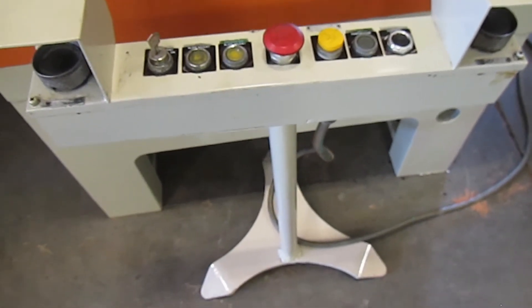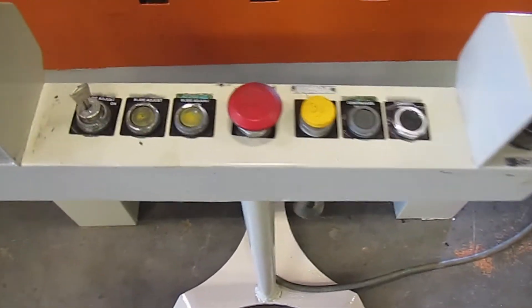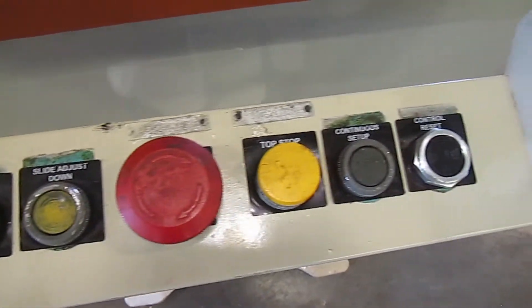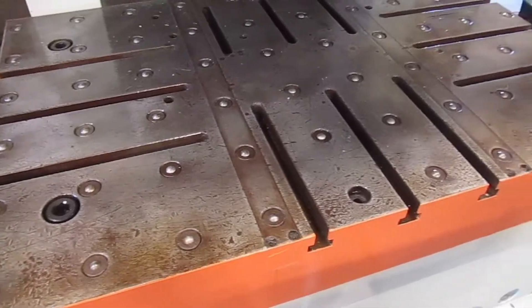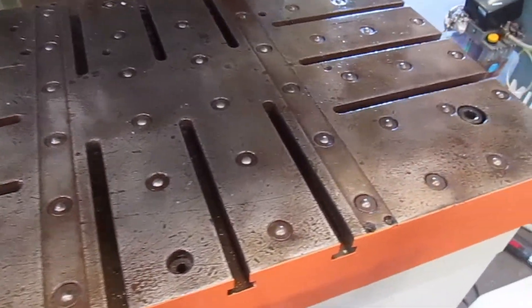This is the T stand for the press and a bolster plate. It's T slotted right to left and front to back. It also has these rollers.